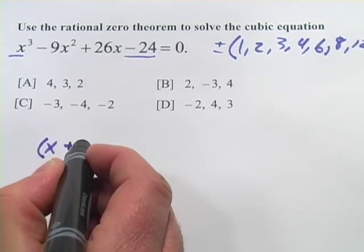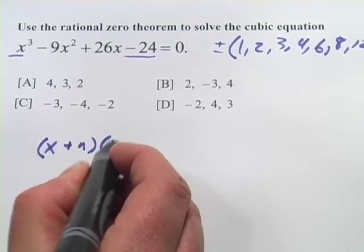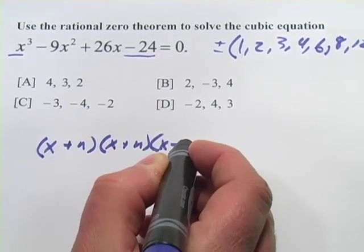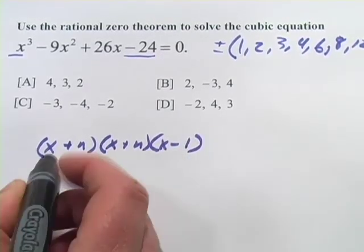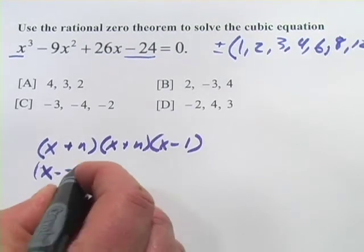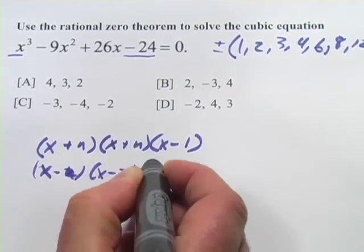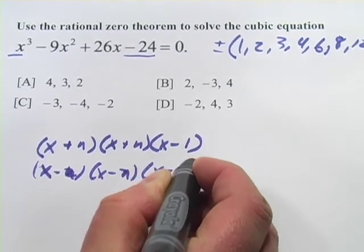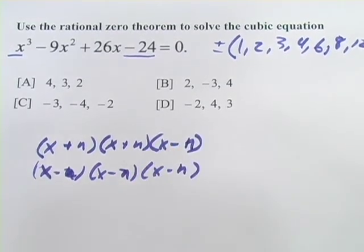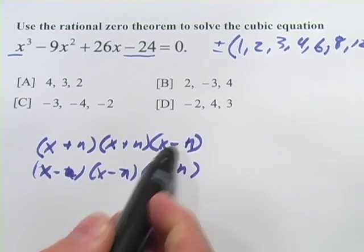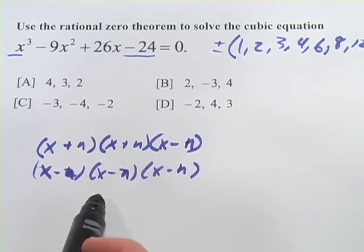Or I suppose you could have x minus something times x minus something times x minus something. Those would be the two ways you could get a negative result for that constant term. You have to have an odd number of negative signs to do that.